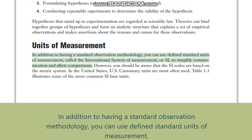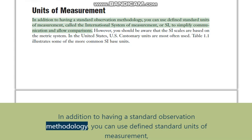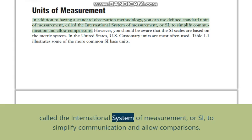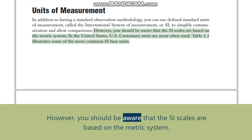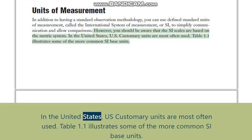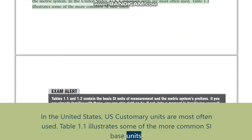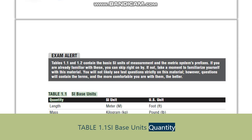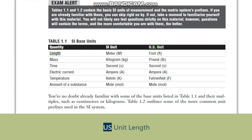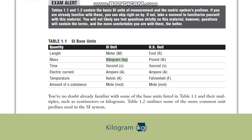Units of measurement: in addition to having a standard observation methodology, you can use standard units of measurement called the International System of Measurement, or SI, to simplify communication and allow comparisons. You should be aware that the SI scales are based on the metric system. In the United States, U.S. customary units are most often used. Table 1.1 illustrates some of the more common SI base units, including meter (m) for length, kilogram (kg) for mass, and second (s) for time.